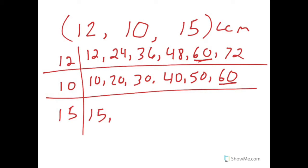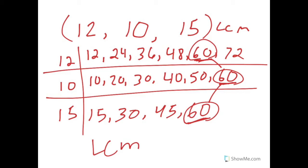Fifteen. Thirty. Forty-five. Sixty. Okay. So, as it turns out, the least common multiple that they all have in common is sixty. So, the LCM, or least common multiple of twelve, ten, and fifteen is sixty.